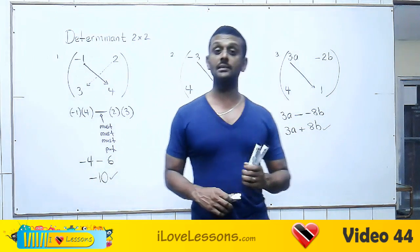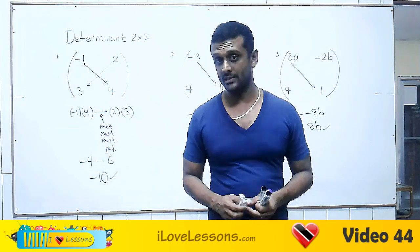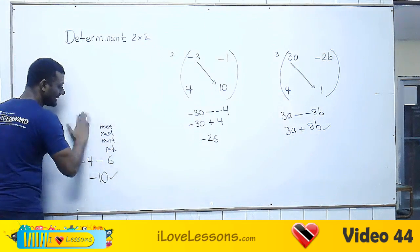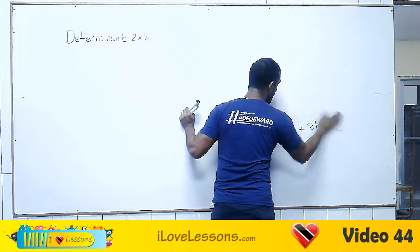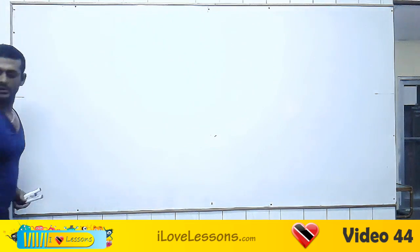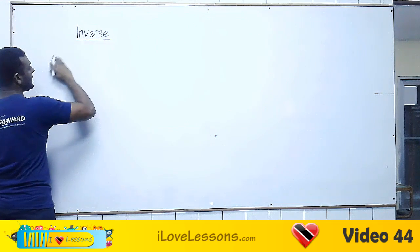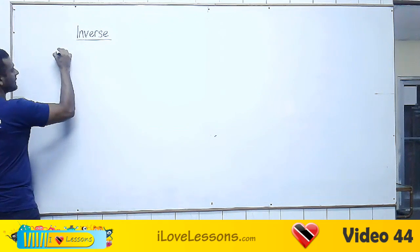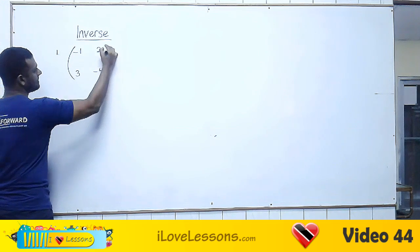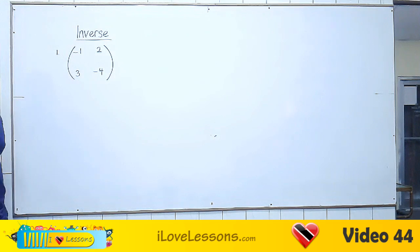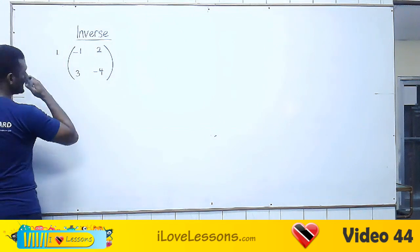Now you know how to find the determinant. I'm going to show you how to find the inverse of a matrix now. So we're going to find the inverse of a two-by-two matrix. The first step is to find the determinant, so let's find the determinant first.